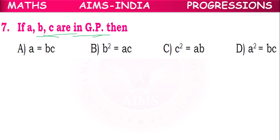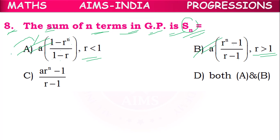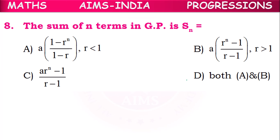Seventh question: If a, b, c are in GP, then b² = ac — the square of the middle term equals the product of the other two terms, so option B is correct. Eighth question: The sum of n terms of a GP is Sn = a(1 − rⁿ)/(1 − r) and also Sn = a(rⁿ − 1)/(r − 1). Both A and B are true, and since there is an option D covering both, option D is correct.